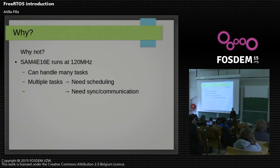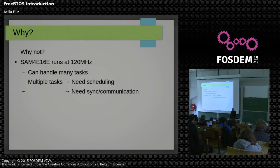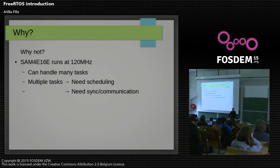So why would I use this operating system? Because currently we have pretty powerful microcontrollers — like the Atmel SAM4, which runs at 120 MHz. That's pretty much faster than my first PC. So with that much power you can handle a lot. And as long as you want to do multiple things with a single-chip computer, you will want to schedule them, prioritize them, communicate between your tasks, and synchronize them. So it boils down to: I have a very powerful single-chip computer, so why not use a good operating system on that?